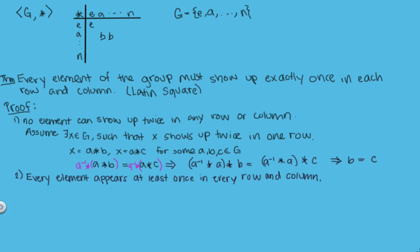Now for the second part of the proof we need to show that every element appears at least once in every row and column. And again I will just show this for each row.